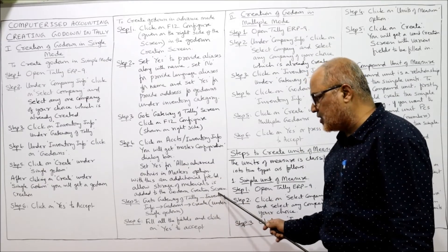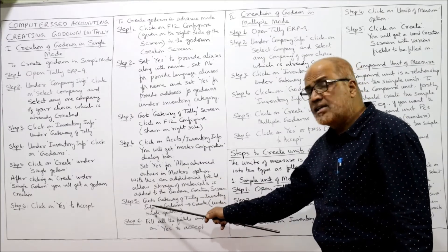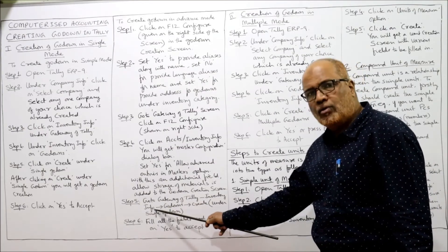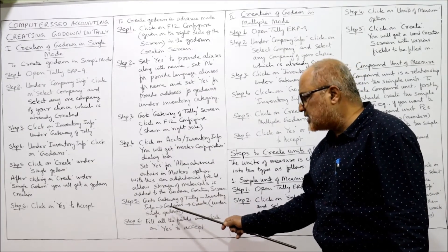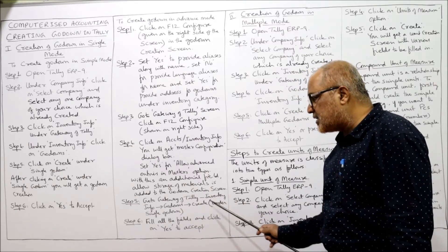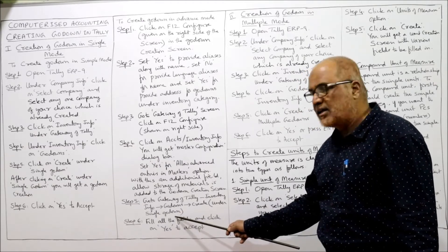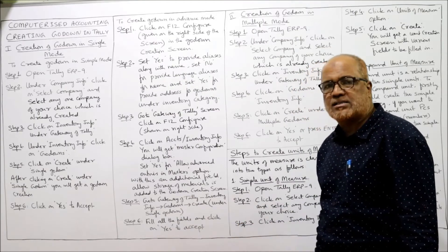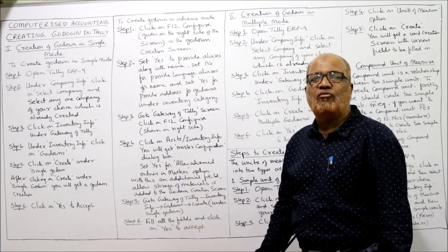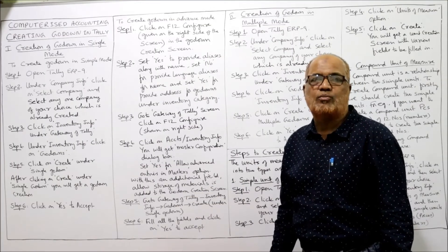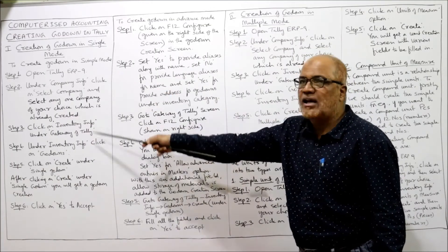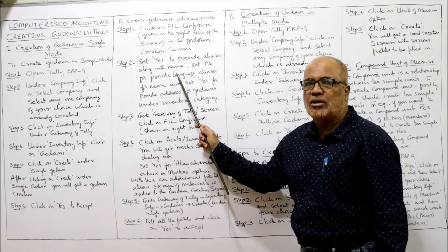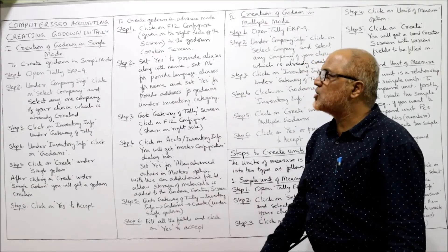With that setting, an additional field 'Allow storage of material' is added to the Godown Creation screen. Step 5: Go to Gateway of Tally, select Inventory Info, select Godowns, then click Create under Single Godown. Step 6: Fill all the fields and click Yes to accept. So again there are six steps in advanced mode.